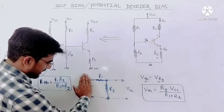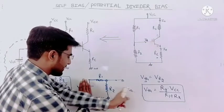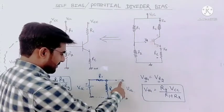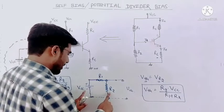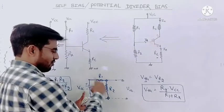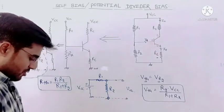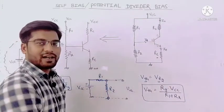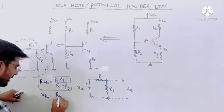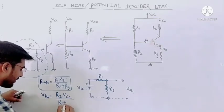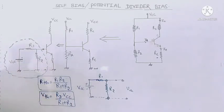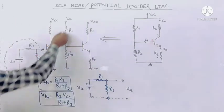To summarize: RTH is found by shorting the voltage supply and seeing both resistors in parallel. VTH is found using the voltage divider rule: VTH = R2·VCC / (R1 + R2). We have now converted this circuit into its equivalent in terms of RTH and VTH.